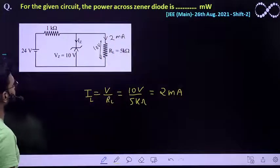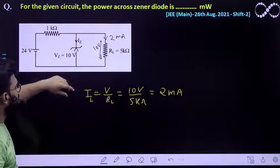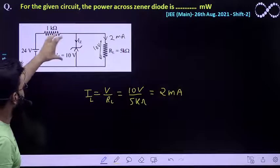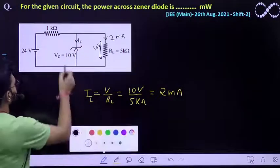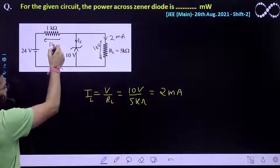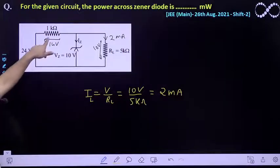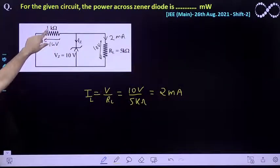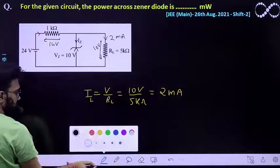Similarly, you can easily find out the current across this 1 kilo ohm resistor because the current, because potential across this Zener diode is 10 volts so the potential across this voltage, this resistor must be equal to 14 volt which is 24 minus 10.